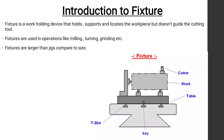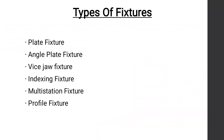Fixtures are used in operations like milling, turning, and grinding. Milling operations are done on a milling machine, turning on a lathe machine. Fixtures are usually larger than jigs in size. In a jig there is a bush to guide the cutting tool, but in a fixture there is nothing to guide the cutting tool — this is the basic difference between a jig and a fixture.